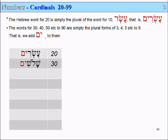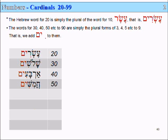For 40, we take Arba, which means 4, and add -im to make it a plural, and it becomes 40. And Chamesh, which means 5, we add -im to it, it becomes 50. For 60, we take Shesh and add -im, and it becomes Shishim, 60. And 70: Sheva, add -im, and it becomes Shivim, 70.